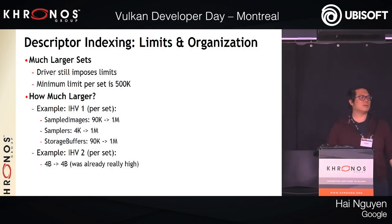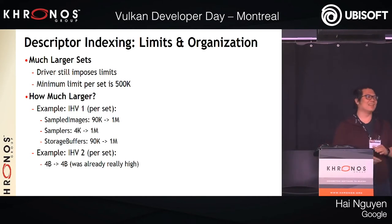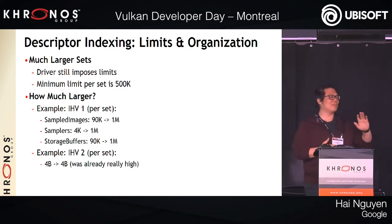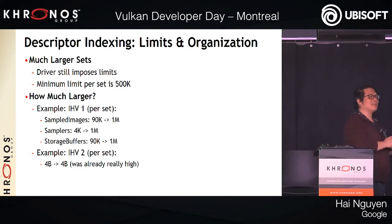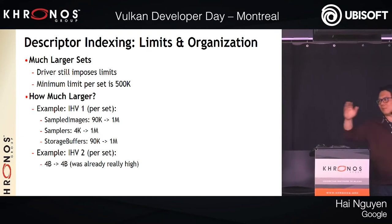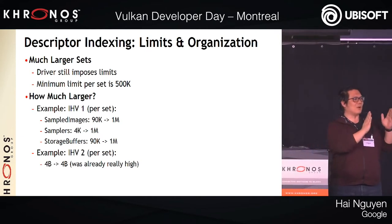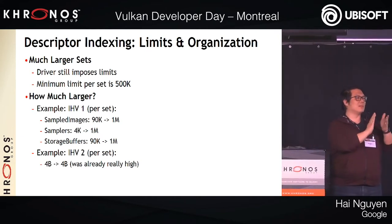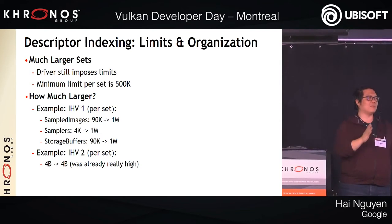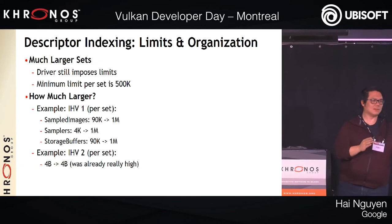Q: Can you define 'dynamic non-uniform'? A: Dynamic non-uniform means that each invocation of the lane — going back to Daniel's talk — can be arbitrary. When it's dynamic uniform, the value is the same across all invocations. That's what I meant by these words being overloaded.